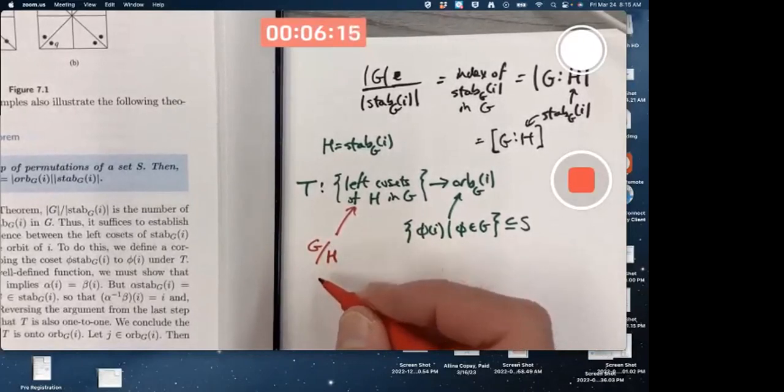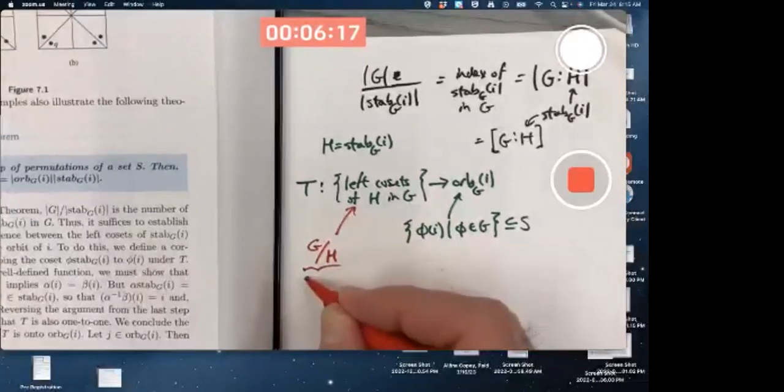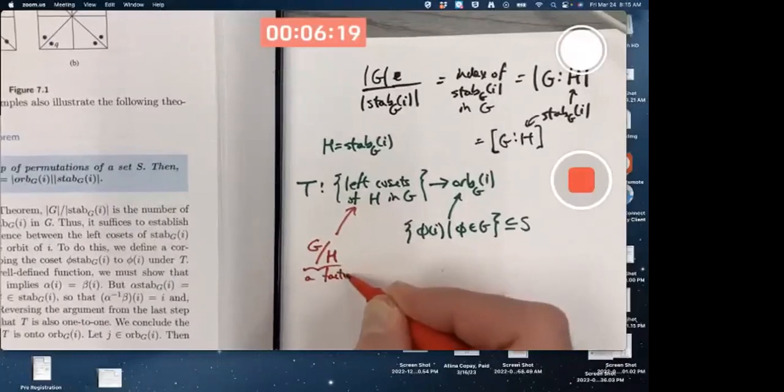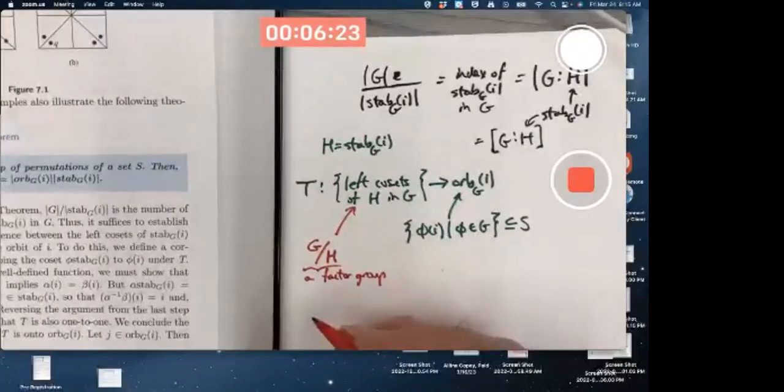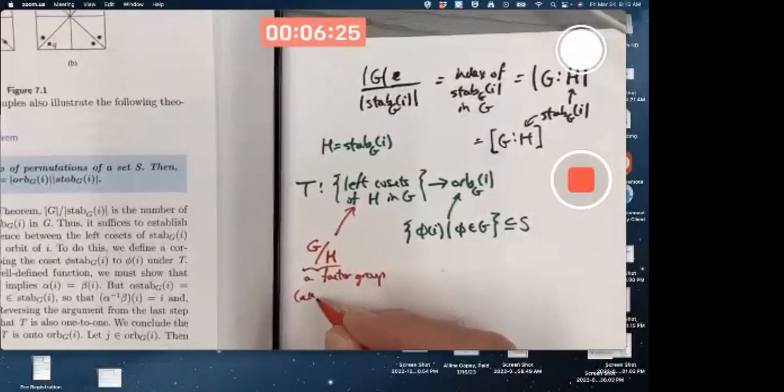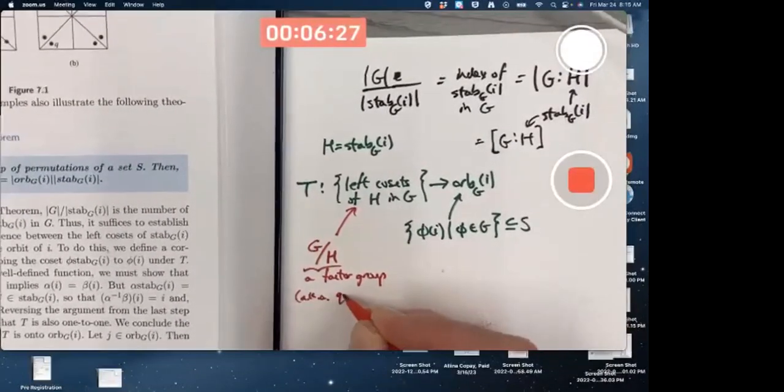And you call this thing a factor group. Actually, that's not a unique name. It's also known as a quotient group.